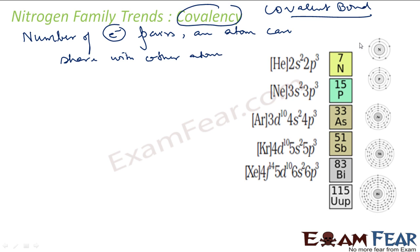For nitrogen, the maximum covalency allowed is 4. Why? Nitrogen, if you see, nitrogen's electronic configuration is 1s2, 2s2, 2p3. So this is not bonded. This is the one that takes part in the bond. So 1s bond and 3p1 are available for bonding.